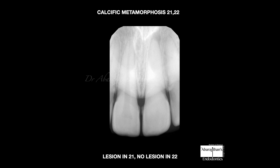Hence these teeth are asymptomatic, their periapical lamina dura is intact, and these teeth do not require any intervention. But sometimes, in spite of the body's attempt to sclerose the root canal anatomy and prevent necrosis, the tooth still undergoes necrosis and causes a periapical lesion. This is a nice case to discuss because we had both situations in the same patient.